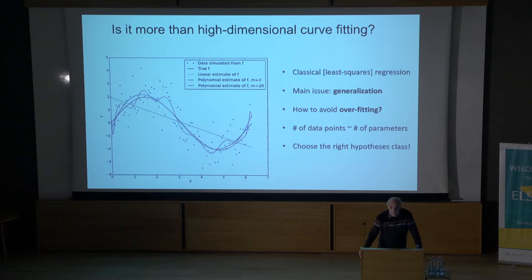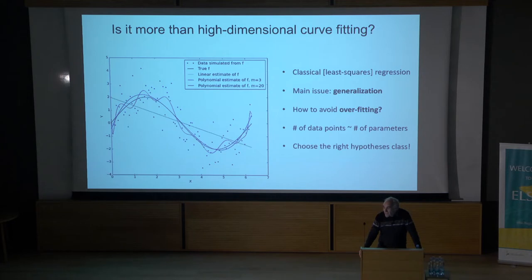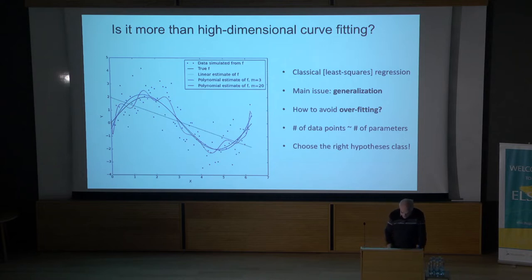We just heard from Andrew that this bias-variance trade-off, or essentially complexity-accuracy trade-off, has some surprises for us. When we increase the dimensionality, it violates the basic intuition that the number of parameters should scale with the size of the data. That's definitely not true for deep learning.